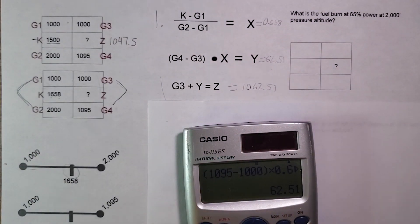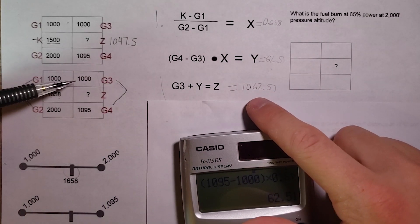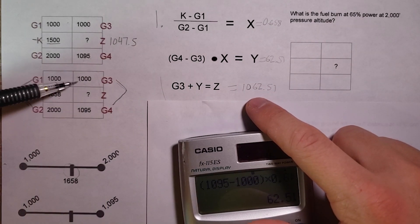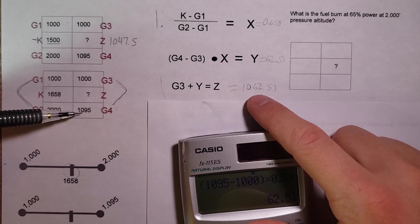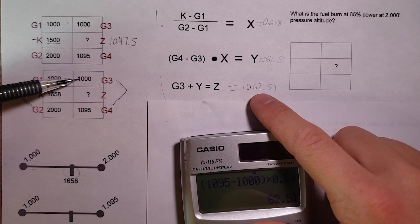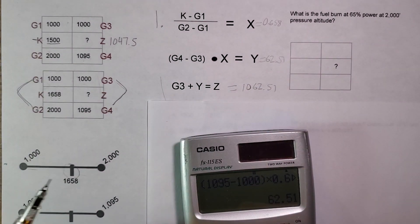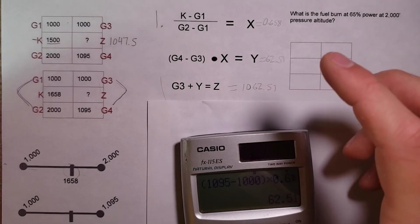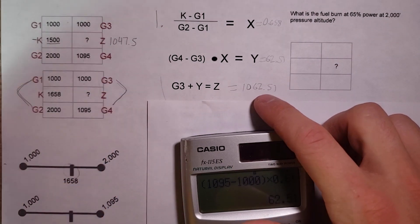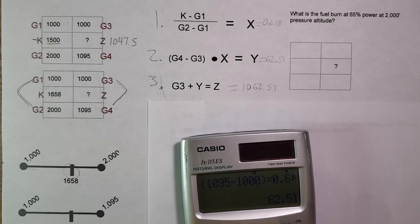The final step is to look at this number and ask: does this make sense? It's in between the two numbers, which it has to be, and it's closer to 1,095 than it is to 1,000 — which makes sense based on our calculations. So that feels right. Let's try another one.